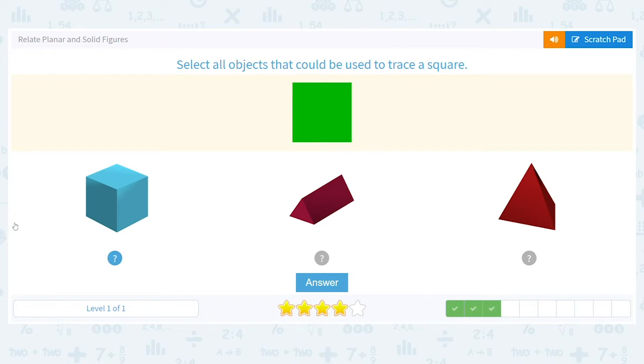Next, we want to trace a square. What could work for the square? We know a cube can work.